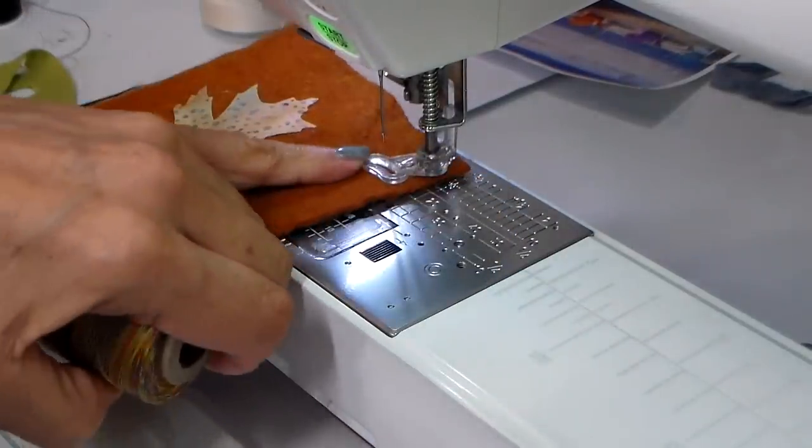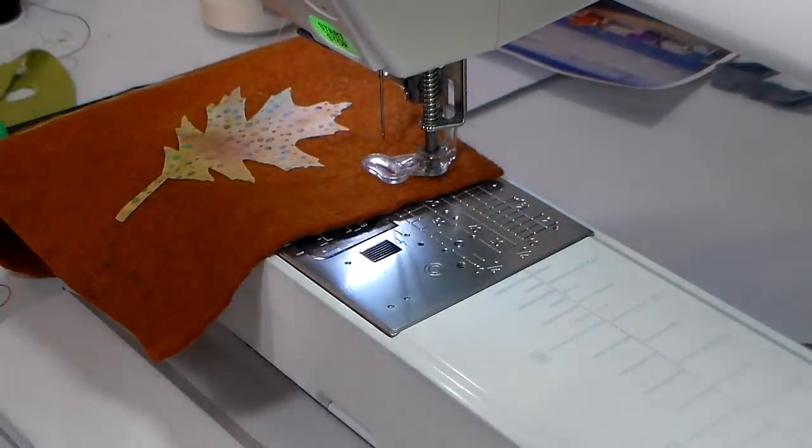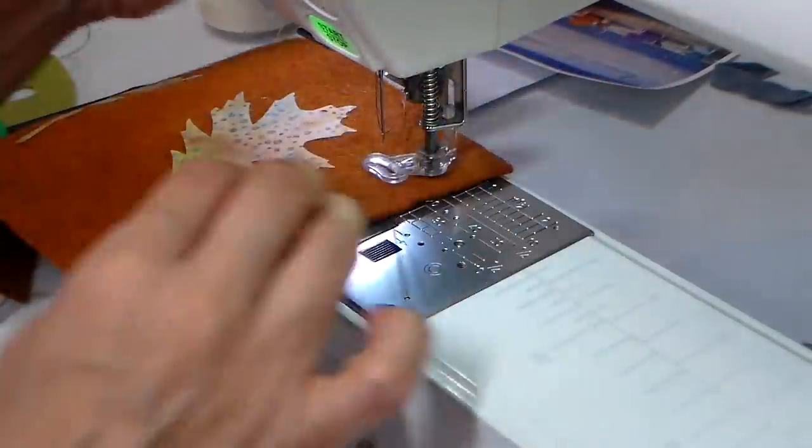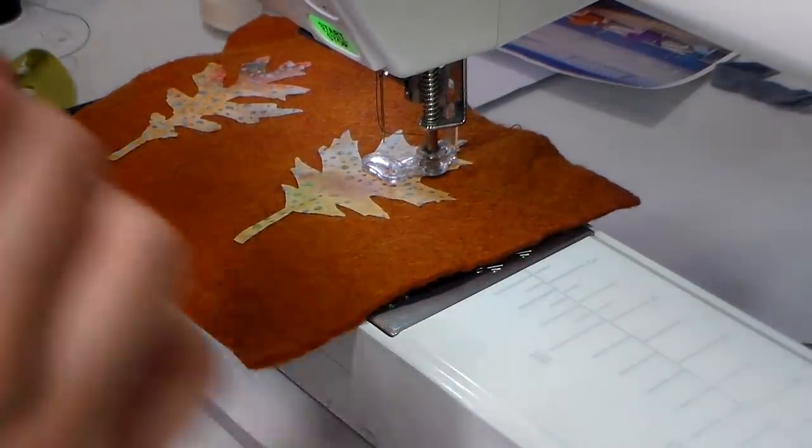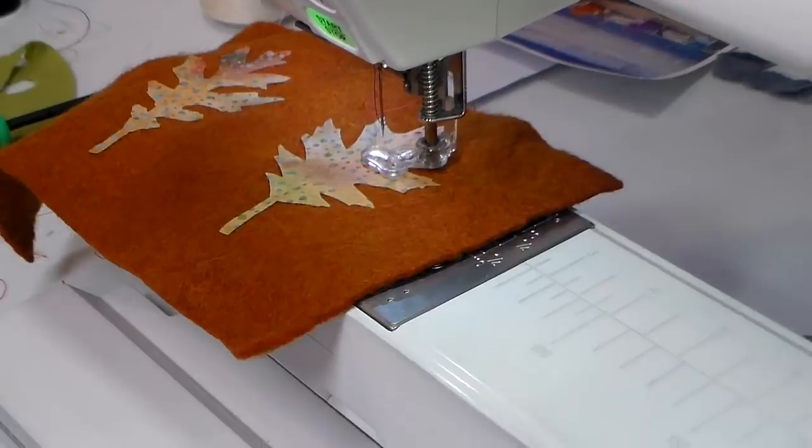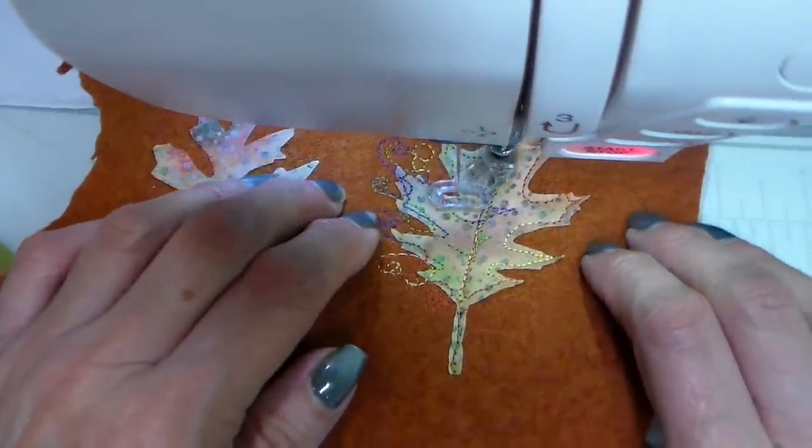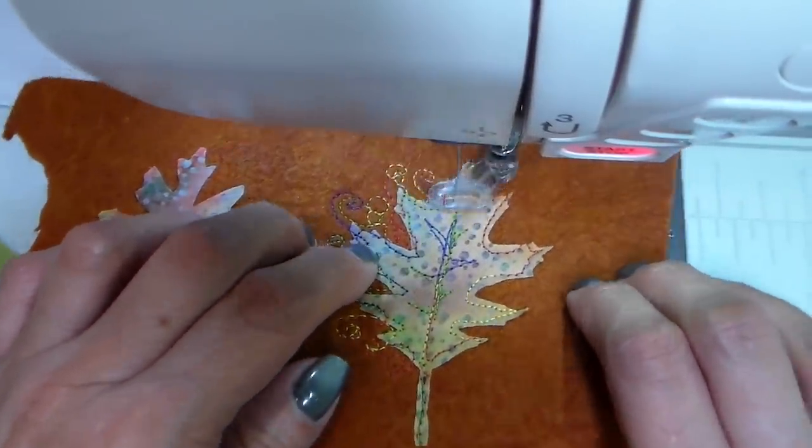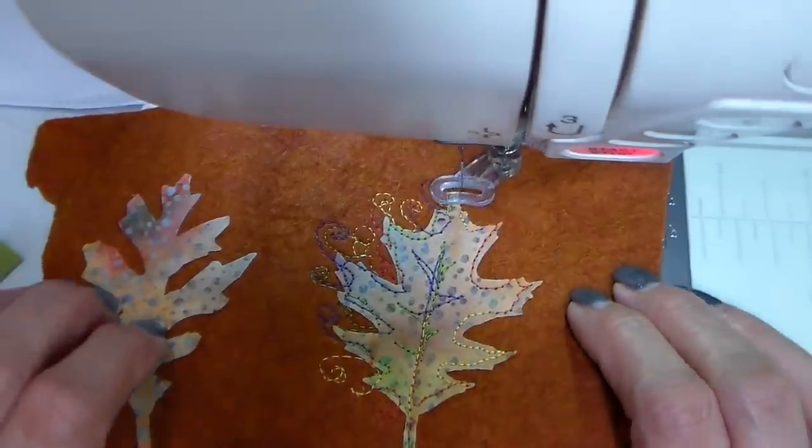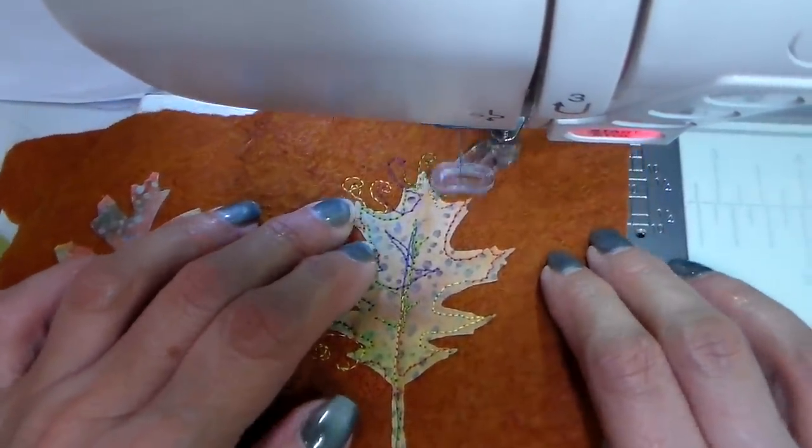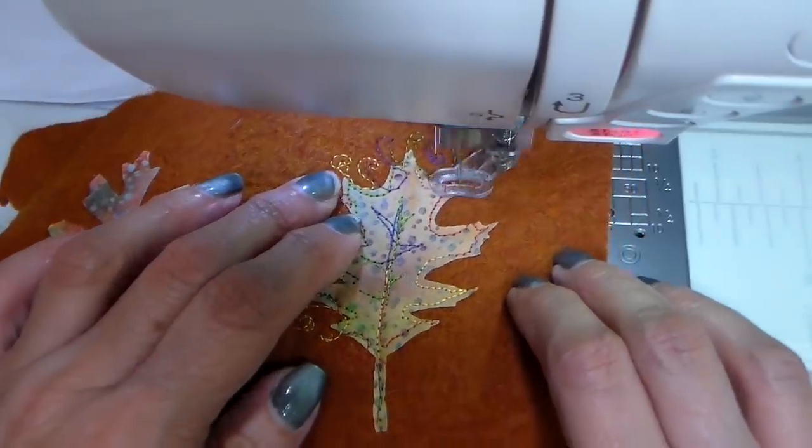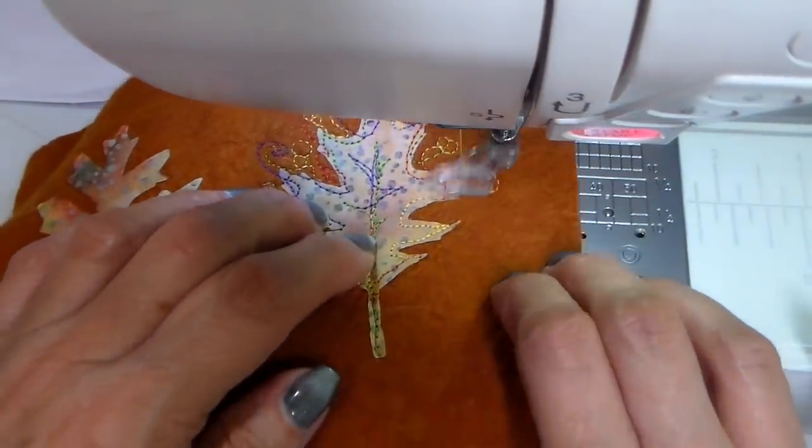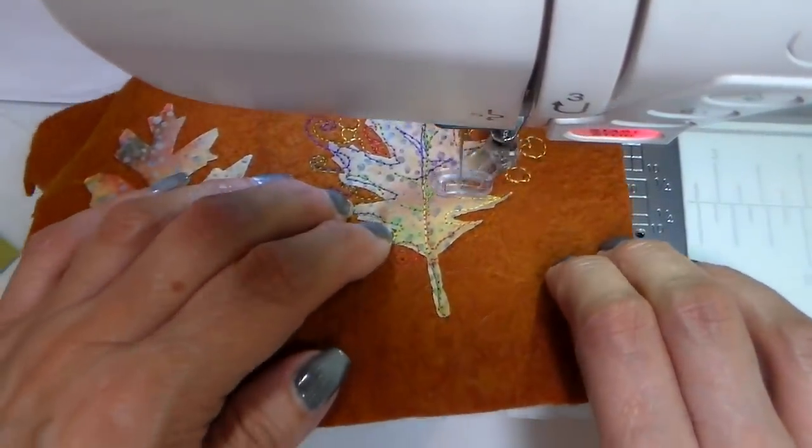At the sewing machine I am using a variegated thread for this and this is my favorite variegated thread. It's by Coats and Clark and again it will be down below. I do like this thread because it lasts a long time. There's a lot of thread on that spool. I have my feed dogs dropped and I have my free motion foot on and notice what I'm doing here. I'm doing little squiggles on the beyond the leaf on that felt. I just thought that that just needed a little extra and so I'm doing all sorts of little you know just meandering and doing little scrolls and loops.